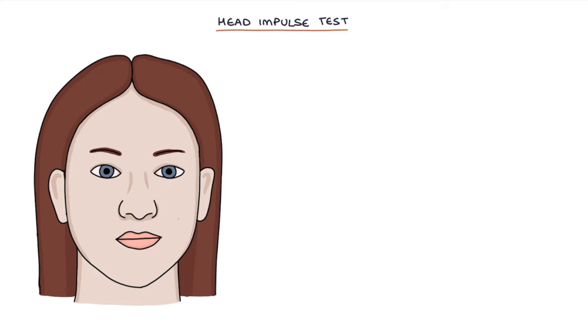The head impulse test involves the examiner and the patient sitting upright facing each other with the patient fixing their gaze on the examiner's nose.